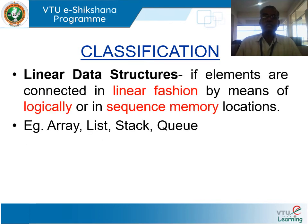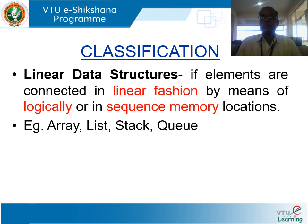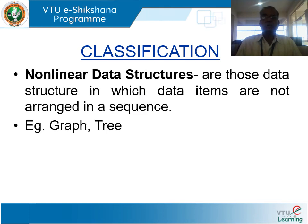Linear data structures have elements connected in a linear or sequential fashion by means of logical or sequential memory locations. Examples are array, list, stack, and queue. Non-linear data structures are those in which data items are not arranged in a sequence; examples include graphs and trees.